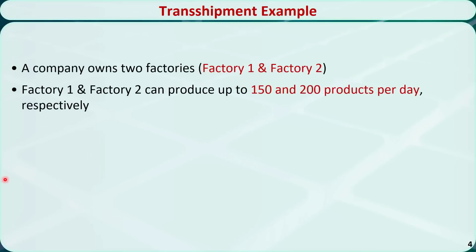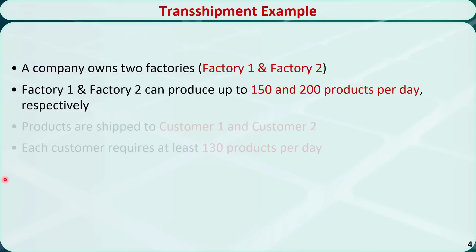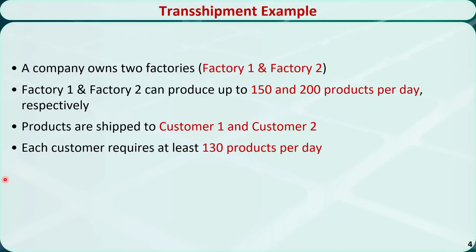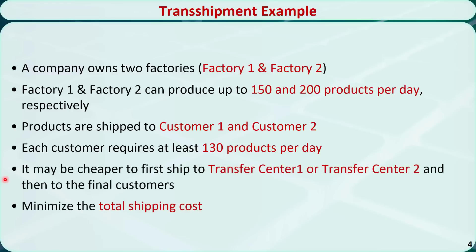Here is an example. A company owns two factories, Factory 1 and Factory 2. Factory 1 can produce up to 150 products per day and Factory 2 can produce up to 200 products per day. Products are shipped to Customer 1 and Customer 2, and each customer requires at least 130 products per day. It may be cheaper to first ship to Transfer Center 1 or Transfer Center 2 and then to the final customers. The objective is to satisfy the demand and minimize the total shipping cost.